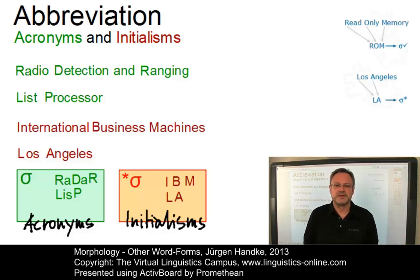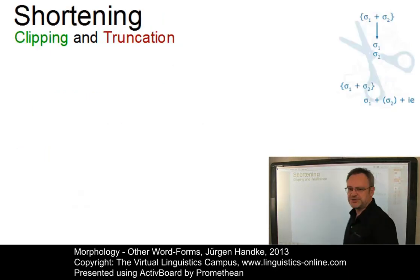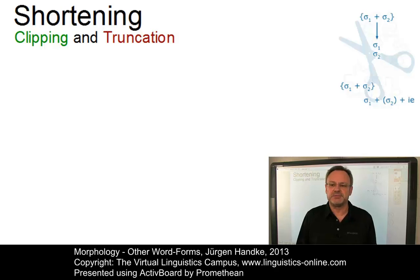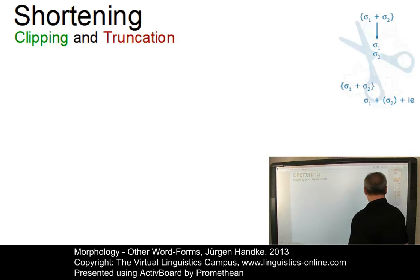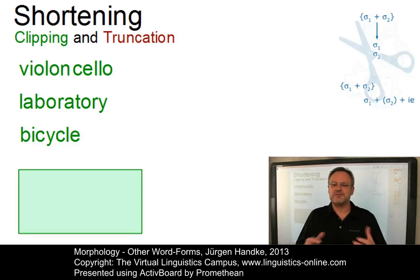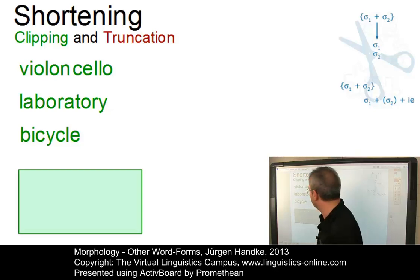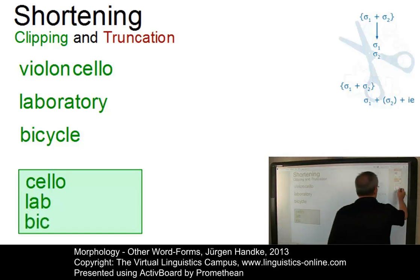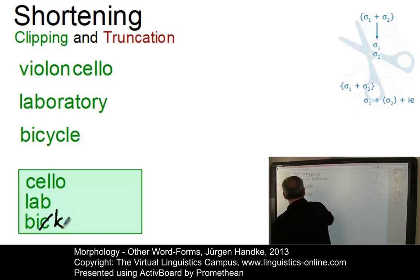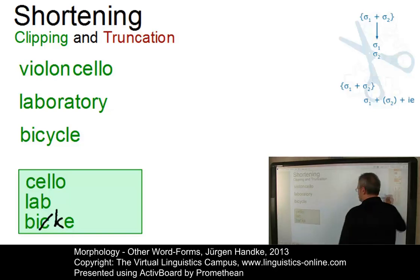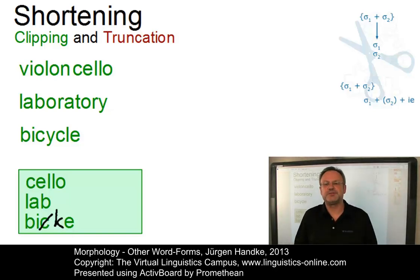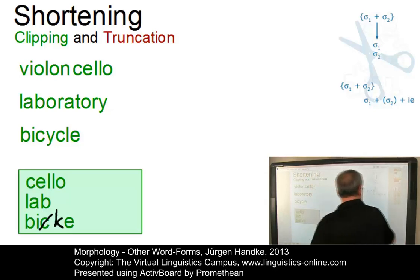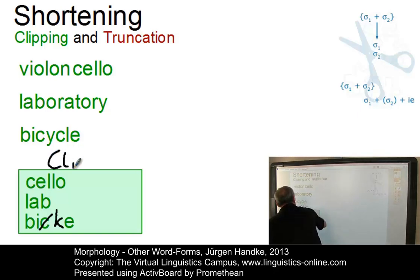Let us now turn our attention to the operation of shortening. There are several ways in which an existing word can be shortened. At one extreme, we have a shortening operation which simply cuts off material to obtain a meaningful shortened form. For example, 'violoncello' can be shortened to 'cello', 'laboratory' to 'lab', and 'bicycle', with a replacement of the final character, to 'bike'. This relatively free shortening operation is referred to as clipping.